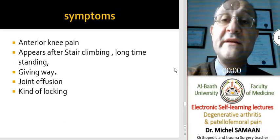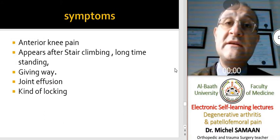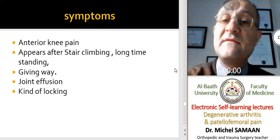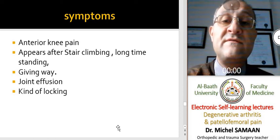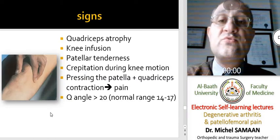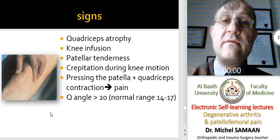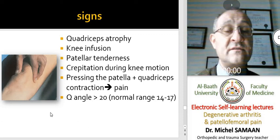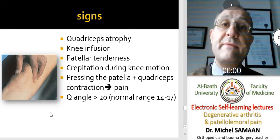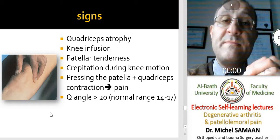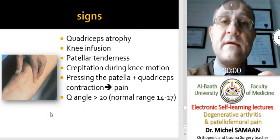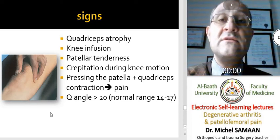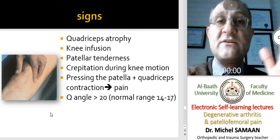The patient usually complains of anterior knee pain, especially when climbing stairs or standing for a long time, some giving way, joint effusion, and some locking of the knee. Clinical signs include quadriceps atrophy due to disuse from pain, knee effusion, and patellar tenderness — pressing the patella on the femur causes pain. Crepitation during knee motion in the patellofemoral joint is present, and the grinding test is positive: pressing the patella with consequent quadriceps contraction elicits pain in the patellofemoral joint.